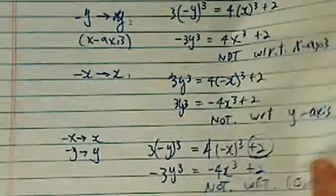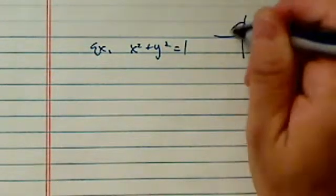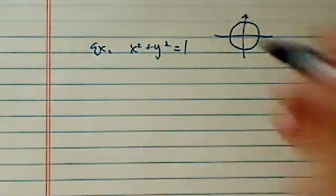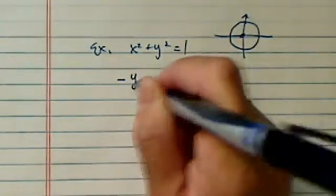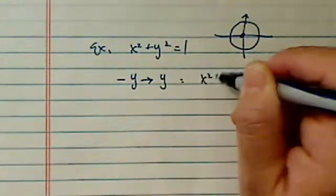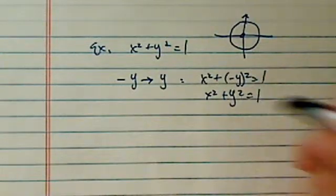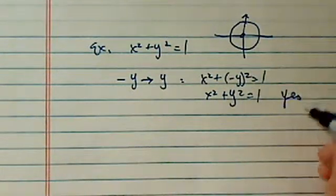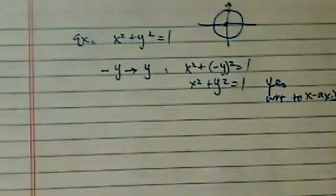Let's move on to the second one where we have a circle, essentially. Example 2 says we have x² + y² = 1. Now graphically, we'll see this has symmetry all around it because it's a circle centered at (0,0) with a radius of 1. So let's try that first one. Minus y replaced with y. So I have x² + (-y)² = 1. And lo and behold, we got what we have before. So yes, with respect to the x-axis, it is symmetrical.